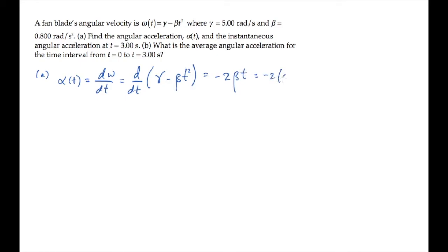We can substitute the value of beta and simplify this to minus 1.60 t radians per second squared. And now we can substitute t equals 3 seconds to find the angular acceleration at that time. And it works out to minus 4.80 radians per second squared.